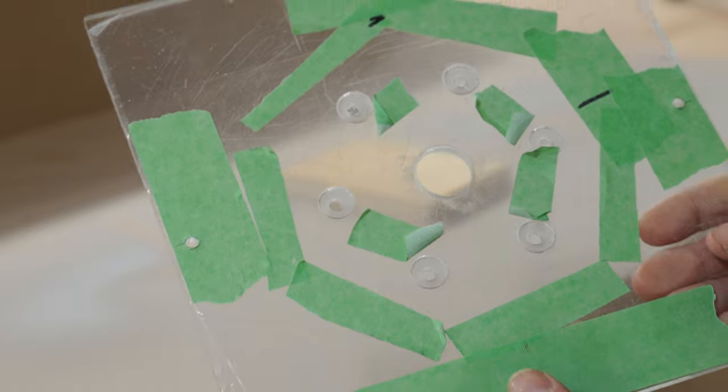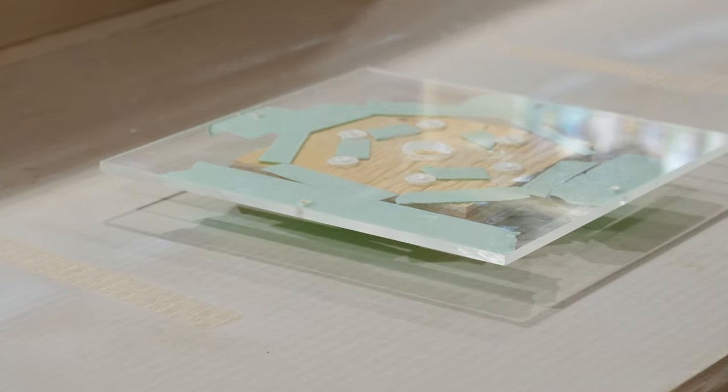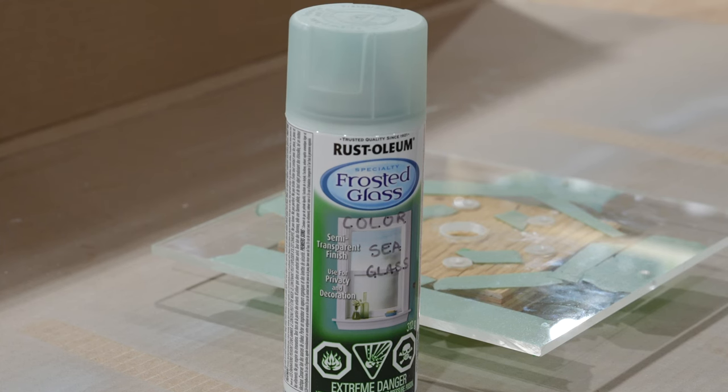For the last step on the bottom plate, I will be spraying a frosted paint. The side I will spray is the opposite side to the countersink holes. The color of the frosted glass paint is sea glass.